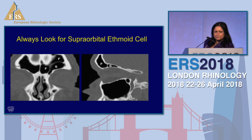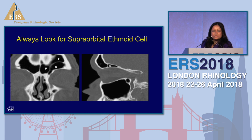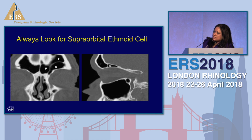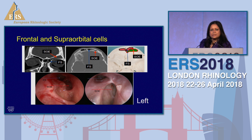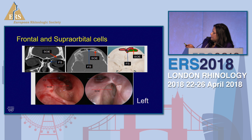I always look for something called the supraorbital ethmoidal cell — an often overlooked cell. If you look at a coronal view and see a partition in the frontal sinus, start thinking of a supraorbital ethmoidal cell. The frontal sinus pneumatizes above the orbit — we all know that anatomy. Sometimes there's a cell behind the frontal sinus that does the same, separated by a partition, best viewed in a parasagittal section. You can see the frontal sinus and behind it another cell pneumatizing into the orbital plate — the supraorbital frontal cell. Sometimes disease is localized in this supraorbital cell; one patient had several endoscopic and open procedures failing to address pathology far posterior to the frontal sinus.